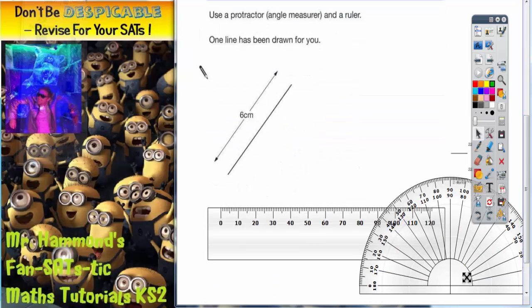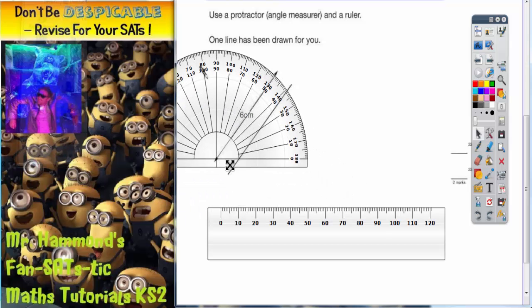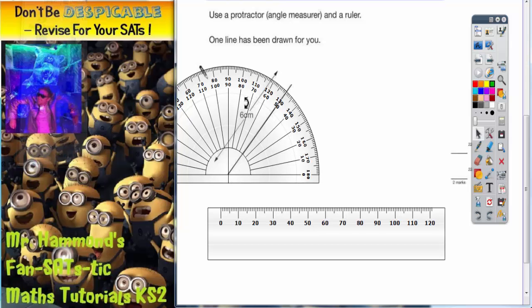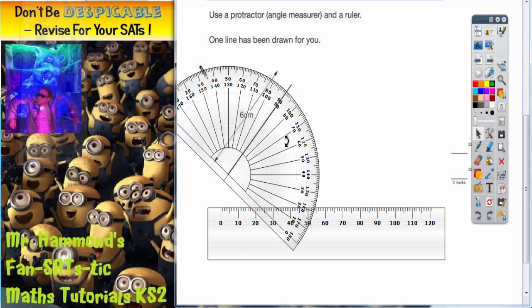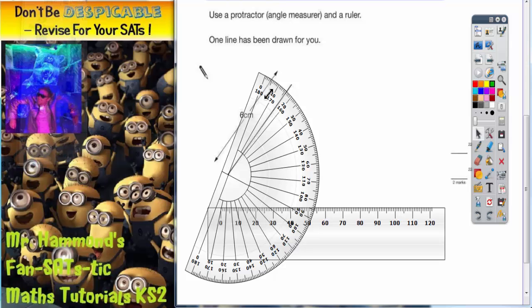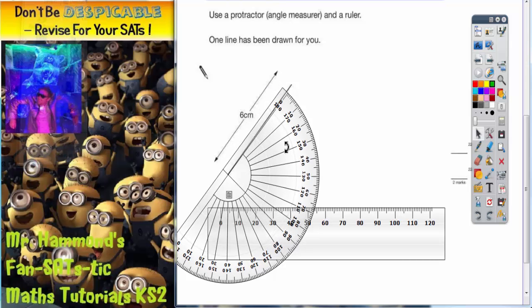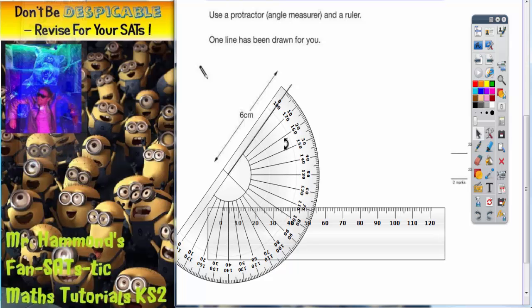So you've got to get your protractor, you've got to place your protractor so that the center of the protractor is on the end of the line, like so. Now we've got to rotate it so that the zero is pointing along the line. So here comes the zero, so continue rotating it, now that zero is pointing along the end of the line.